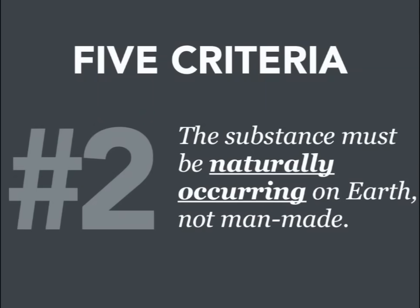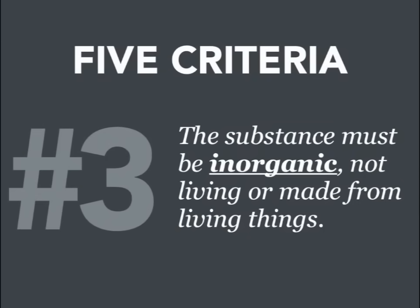Number two, the substance must be naturally occurring on earth. This means it cannot be man-made. So, for example, plastic is not considered a mineral because it doesn't exist naturally. It's created by humans. Number three, the substance must be inorganic, meaning not coming from or made of living things. So, if you talk about tree branches or leaves, they cannot be considered minerals because they are organic — they came from living organisms.